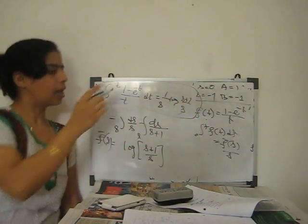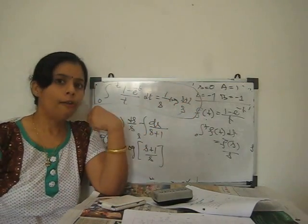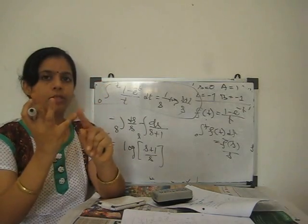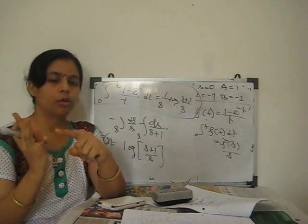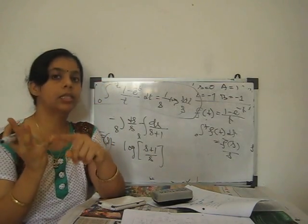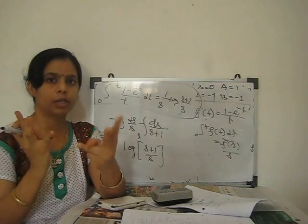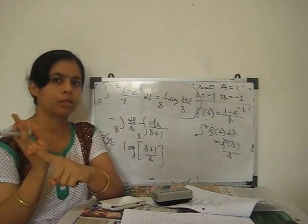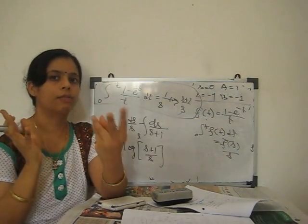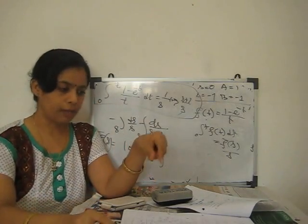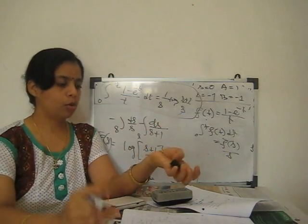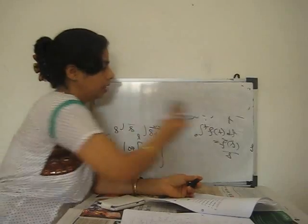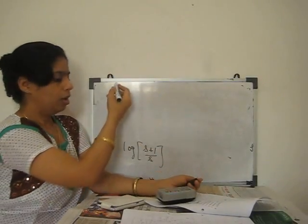This is the Laplace transform of the given function, step by step. First, find the simple Laplace transform of 1 − e^(−t). Second, apply the division-by-t property. Third, apply the integration property. Multiple properties merge with each other.